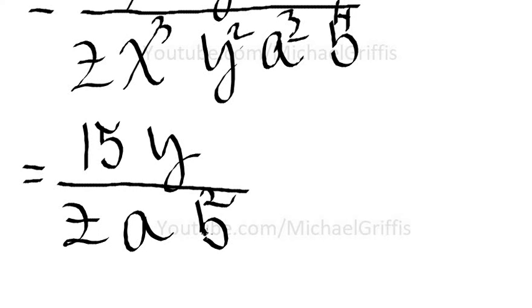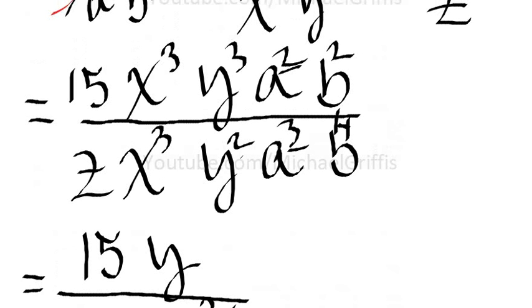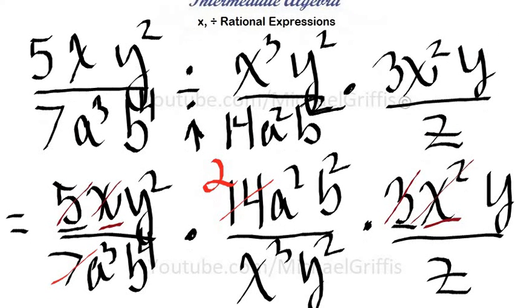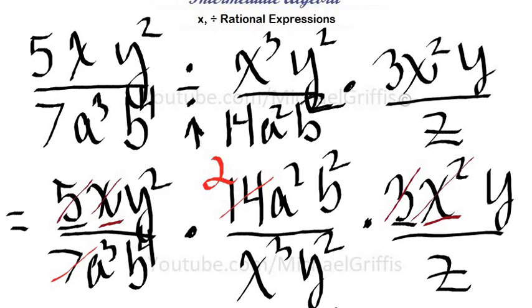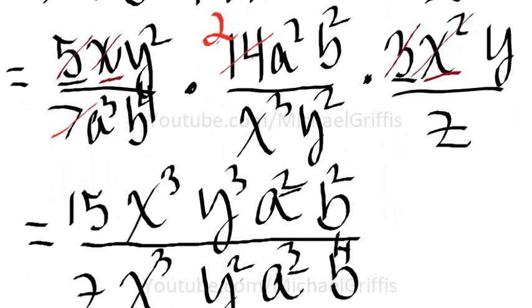Something else is not right. Let's take a look. The seven and the fourteen went to two. That should have been five times two times three, which is thirty. Let's change that.